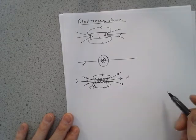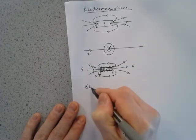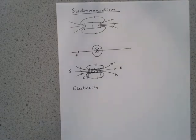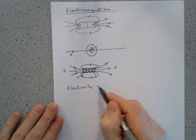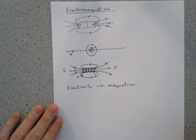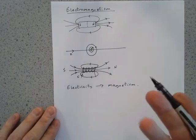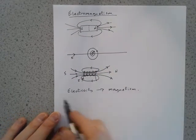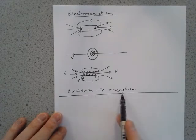In both of these cases — the single wire and the coil — what we see is that a current of electricity produces a magnetic field. That's what happens with an electromagnet, and that is electromagnetism. It's a good idea to draw a line underneath that in your mind, because electromagnetism is where a current of electricity produces a magnetic field.